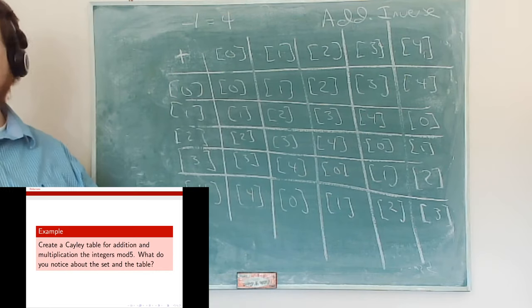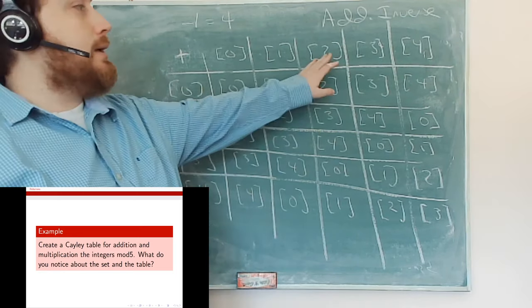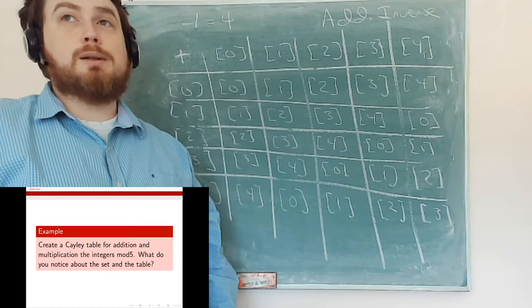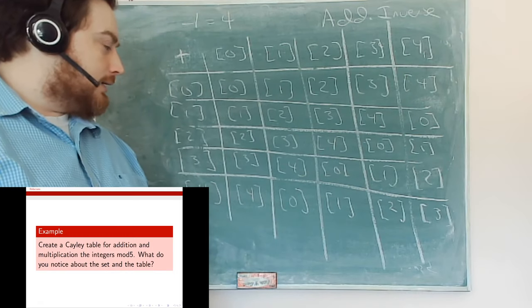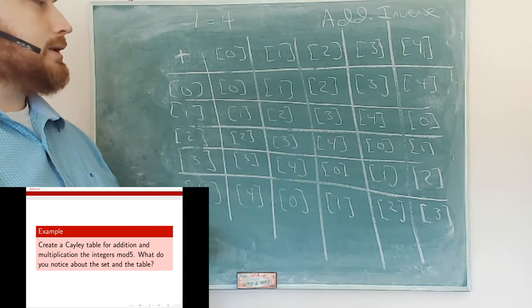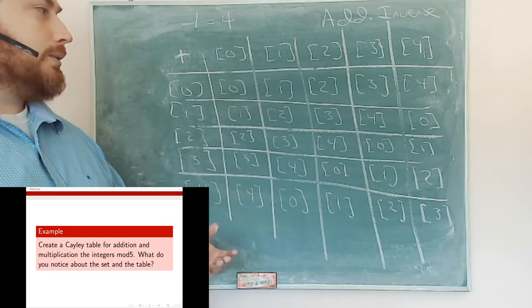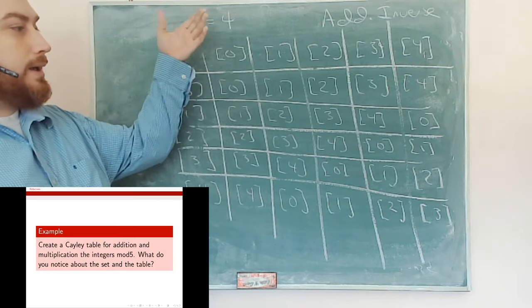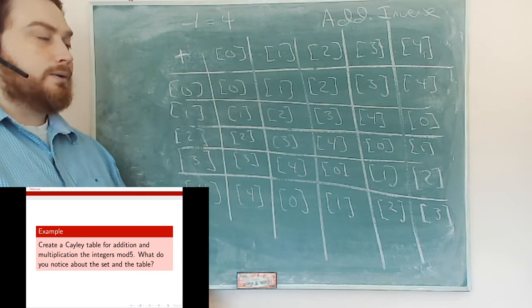So there are nice properties here that carry over from the integers: we still have an identity, we still have inverses, and we're still closed under addition. But we have an entirely new addition defined. We call this addition mod 5, and the table we've built is called a Cayley table, where addition works out in this modular form.